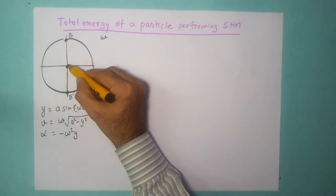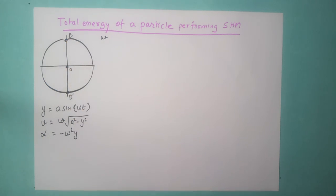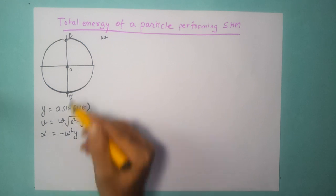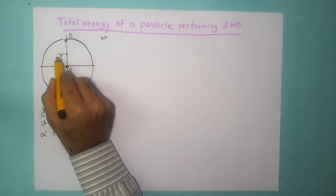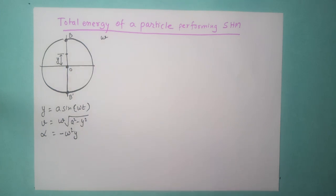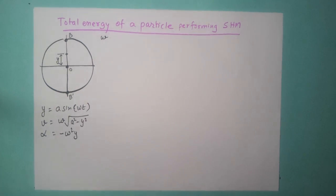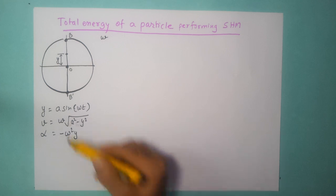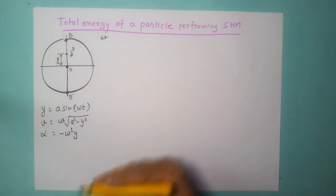Let us assume this object starts from this location, goes over here, comes back and is performing simple harmonic motion. The objective is to find out what is the energy of the particle at any given point in time. Let us say it is at some displacement y from the equilibrium position O. We know that as it goes in this direction its velocity keeps on decreasing, meaning there is a restoring force F acting on it.